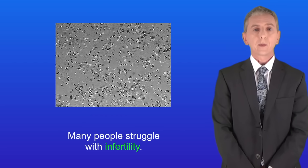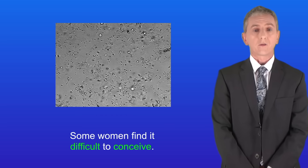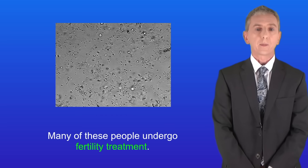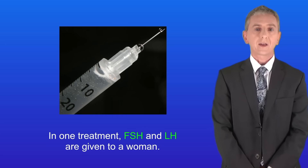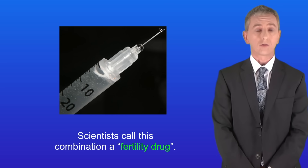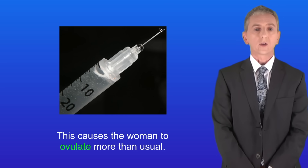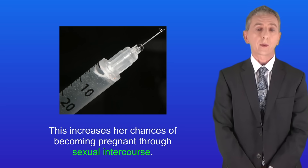Now many people struggle with infertility. For example, some men have a reduced sperm count and some women find it difficult to conceive. Many of these people undergo fertility treatment. In one treatment, FSH and LH are given to a woman — scientists call this combination a fertility drug. This causes the woman to ovulate more than usual, increasing her chances of becoming pregnant through sexual intercourse.